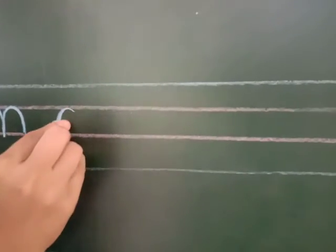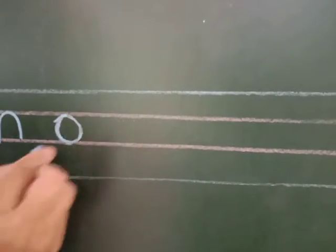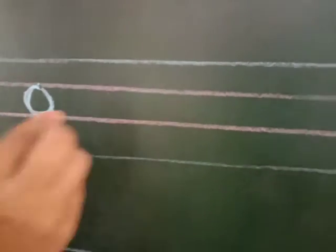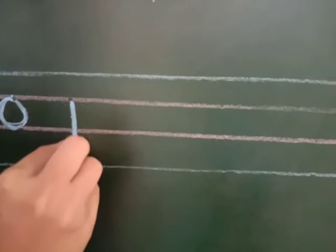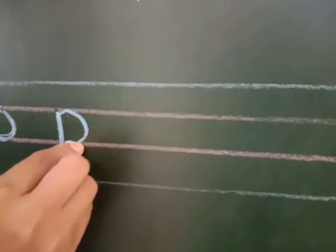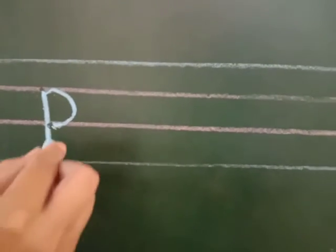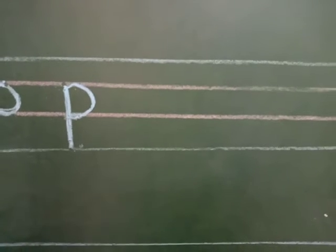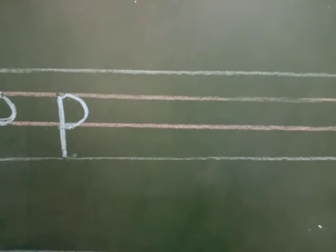Small o — a circle, simply a circle. Small o. Now we are going to learn how to write small p — downside three lines: standing line, half circle or a curve line. Small p. Downside three lines. Small p.